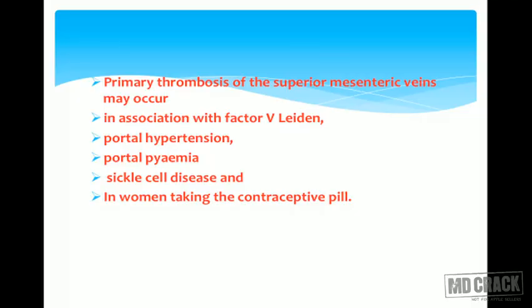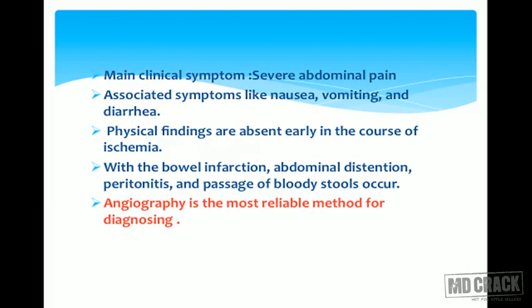Primary thrombosis of the superior mesenteric veins may occur in association with Factor V Leiden, portal hypertension, portal pyemia, sickle cell disease, and in women taking contraceptive pills.